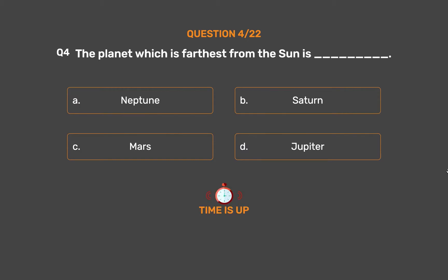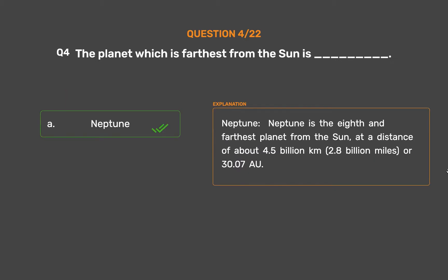The correct answer is Option A: Neptune. Neptune is the 8th and farthest planet from the Sun, at a distance of about 4.5 billion km, 2.8 billion miles, or 30.07 astronomical units.